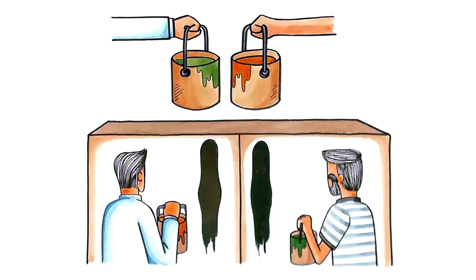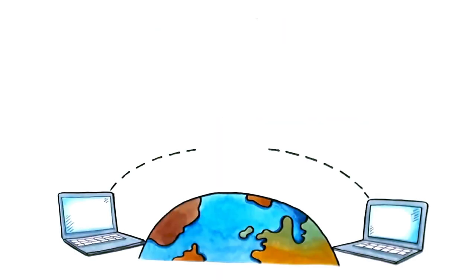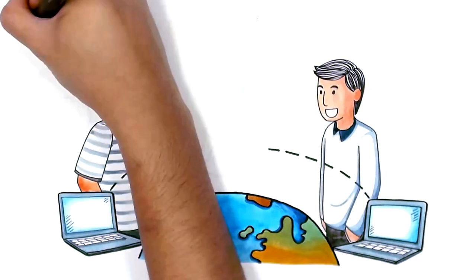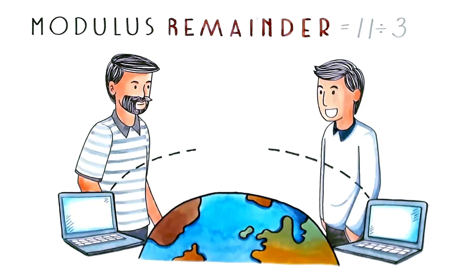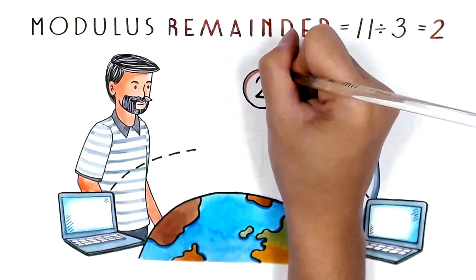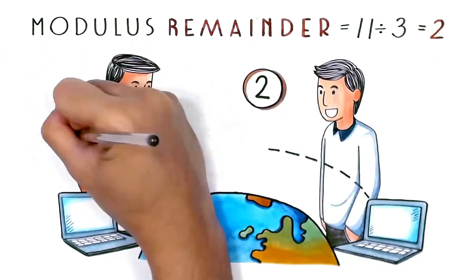This takes place in real life with a mathematical process called modulus, which is just the remainder of one number divided by the other. Once you get the remainder of x and y, you cannot get back x nor y.